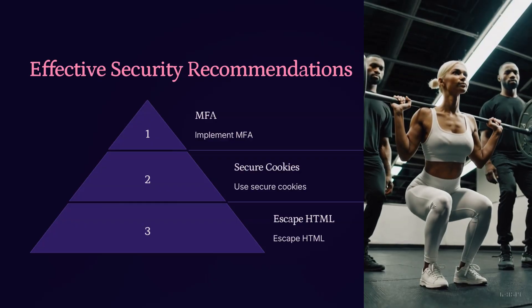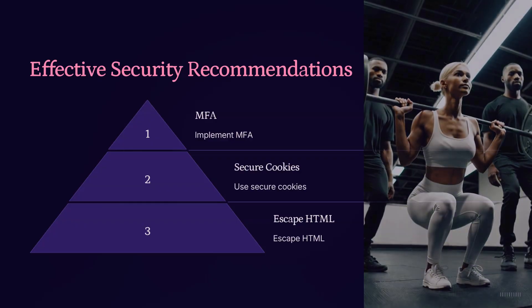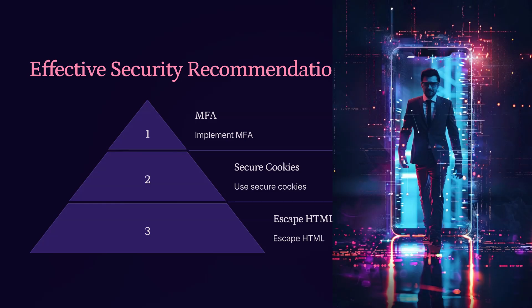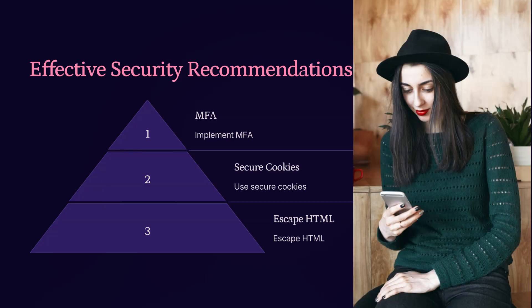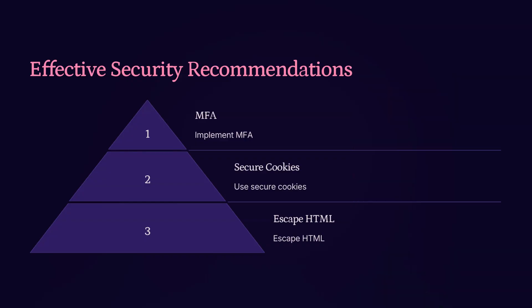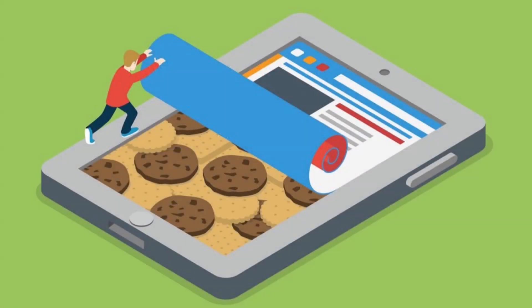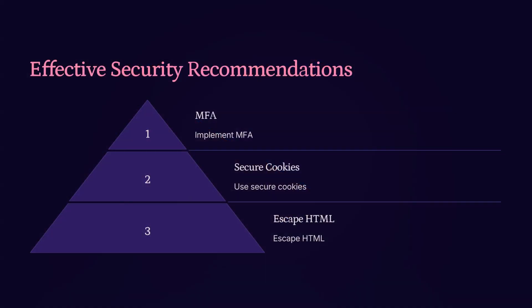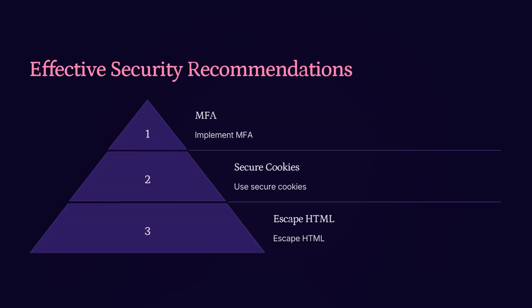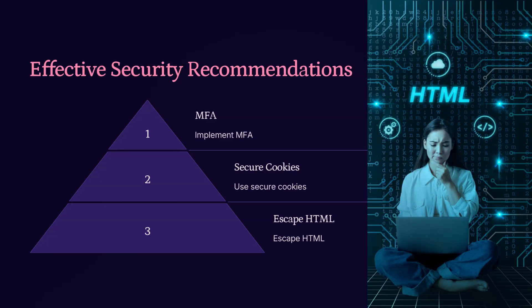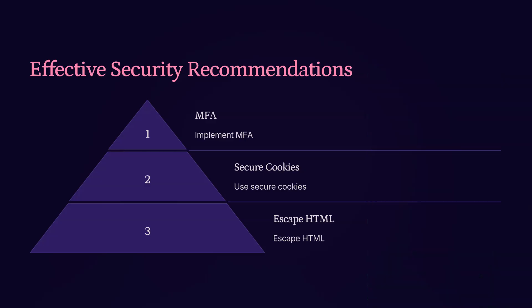To strengthen application security, there are a few key measures every system should implement. First, MFA or multi-factor authentication: by requiring something you know, like a password, and something you have, like a phone, MFA makes unauthorized access much harder. Second, secure cookies: make sure your cookies are marked as Secure and HttpOnly to prevent them from being accessed via client-side scripts or transmitted over unsecured connections. Third, escape HTML: this helps prevent cross-site scripting attacks by ensuring that any user input displayed on the page is rendered as text.